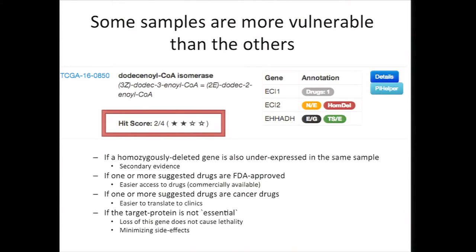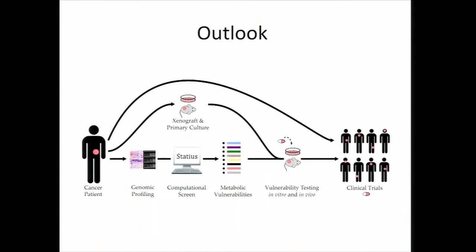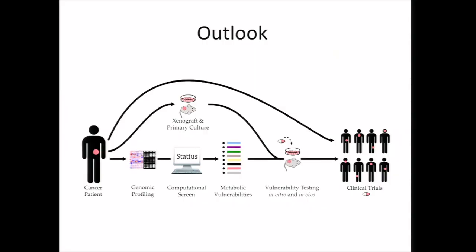We put all of this information as a website, published as a computational resource, and we are actively looking for collaborators. The reason we did this analysis relates to the phenomenon of basket trials. We can imagine a cancer patient walking into a clinic where we get the genomic profiling data, feed it into one of these computational methods, and get an individualized list of metabolic vulnerabilities for that patient. In the meantime, if possible, you can also establish xenografts or primary cultures from the same tumor material. Using this list, you can try to in vitro or in vivo test these vulnerabilities, and if you can show that some are indeed real vulnerabilities, you can go back to a cohort of patients and, in a basket trial manner, collect all samples with the same vulnerability and hopefully establish a clinical trial.